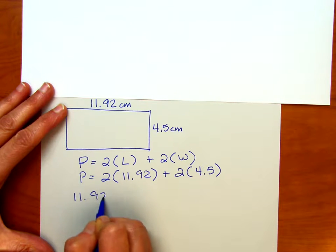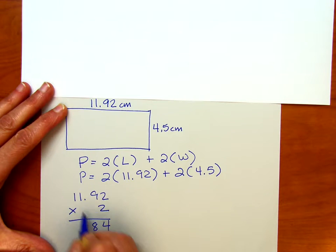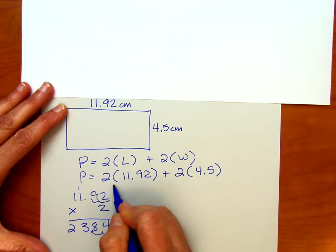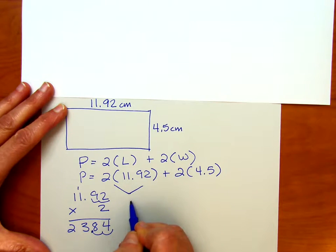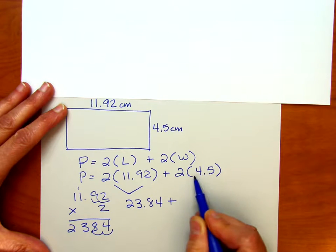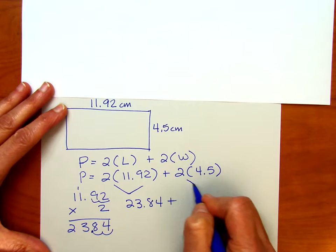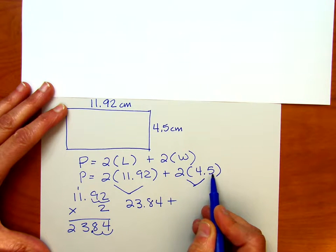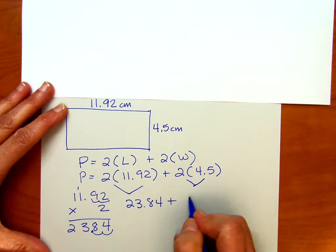So, 11 and 92 hundredths times two, it's going to be four, 18, two, three, and we've got two. And since we have two decimal places, we want to bring that over, so this is going to be equivalent to 23 and 84 hundredths. And four and five tenths times two, that should be nine. I know that two times four is eight, and half times a half is going to be one, so we're going to add that, that's going to be nine.